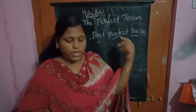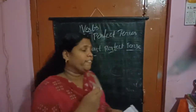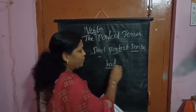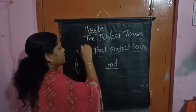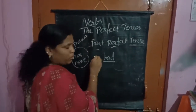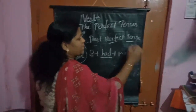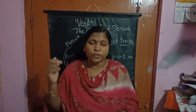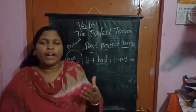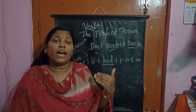Now, past perfect. What is the past perfect, children? When we are using the helping verb 'had' — it is in the past form. When we are using has and have, it is present perfect tense. In the past perfect, the rule is: subject plus helping verb 'had' plus past participle form of verb plus object. We use the past perfect form to say that one thing happened before another in the past.